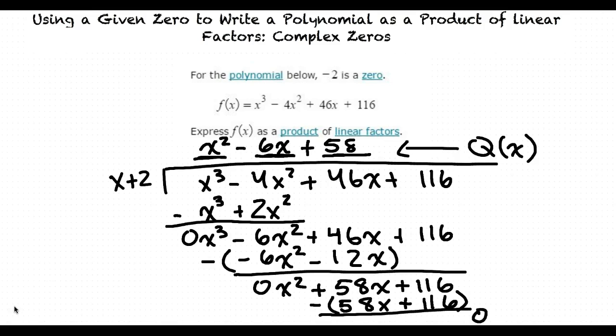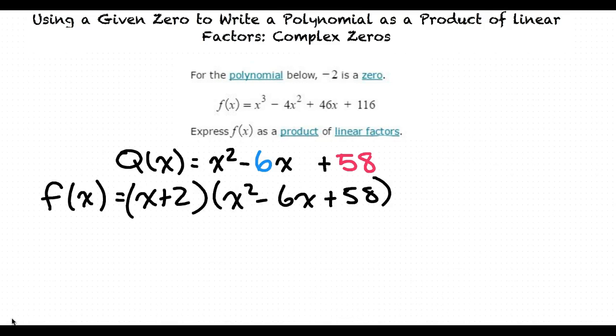So this does make sense, but where does the quadratic formula come in? You said earlier we would be using it. The problem states that we need to write the polynomial as a product of linear factors. So far, we have x plus 2 times x squared minus 6x plus 58. However, x squared minus 6x plus 58 is not a linear factor, so we need to simplify this further. In order to simplify this, we use the quadratic formula.